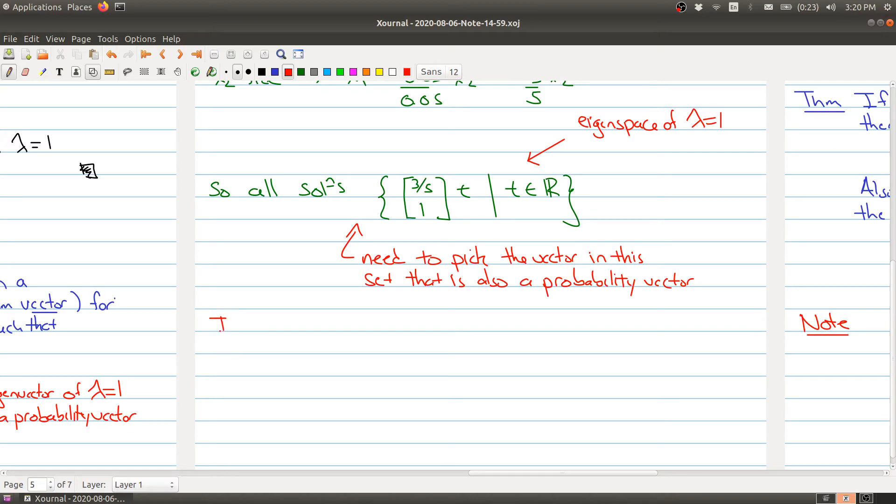So we need to pick the vector in this set that is also a probability vector. So i.e., what we want is to have 3 fifths T plus T to be equaling to one. But now we can solve for T, right, because we have 8 fifths T is equal to one.